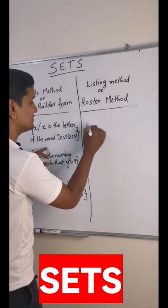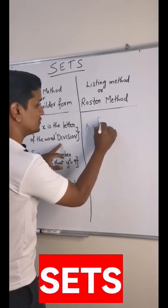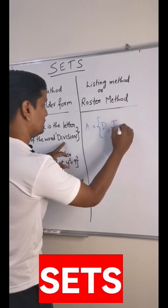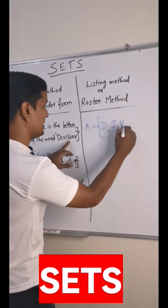And the listing method is where you have to write all the elements. So D, I, V, I, S, O, N - you cannot repeat elements.